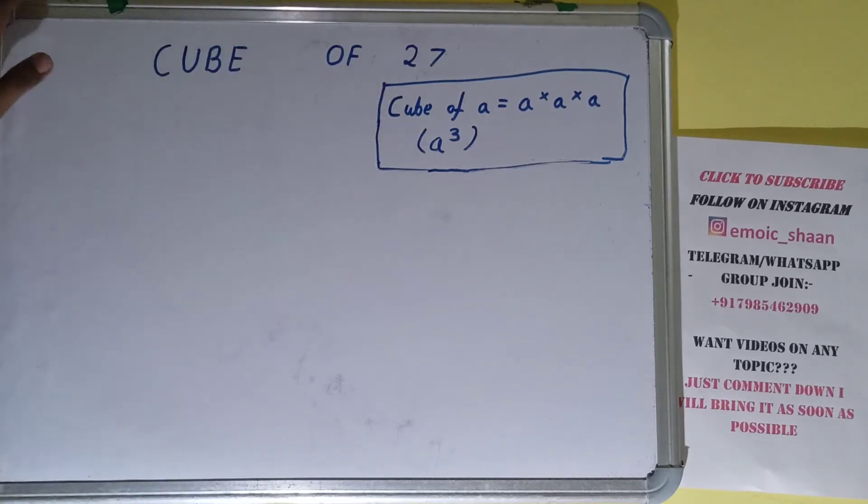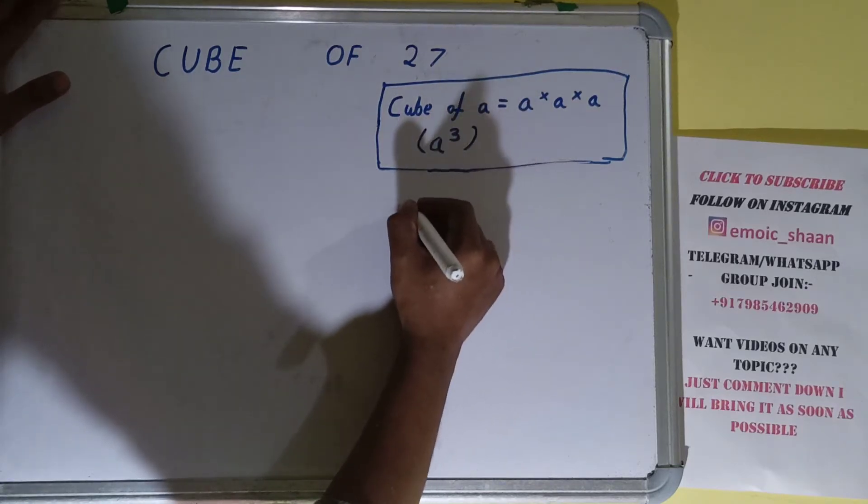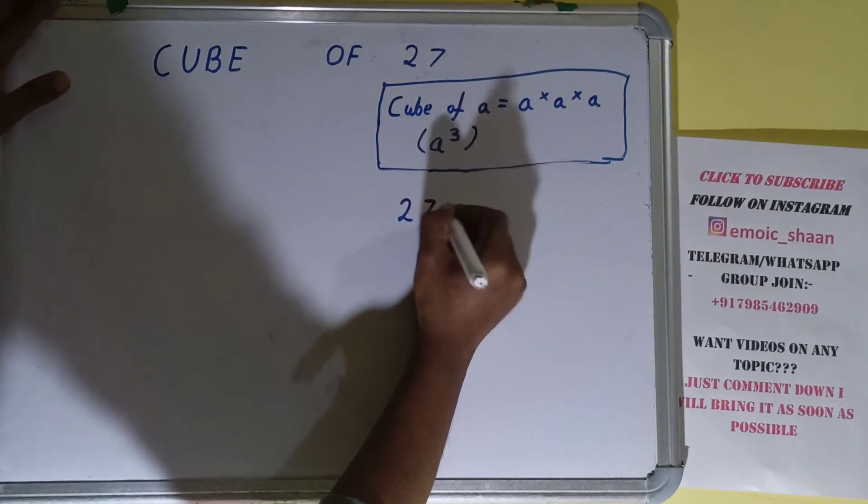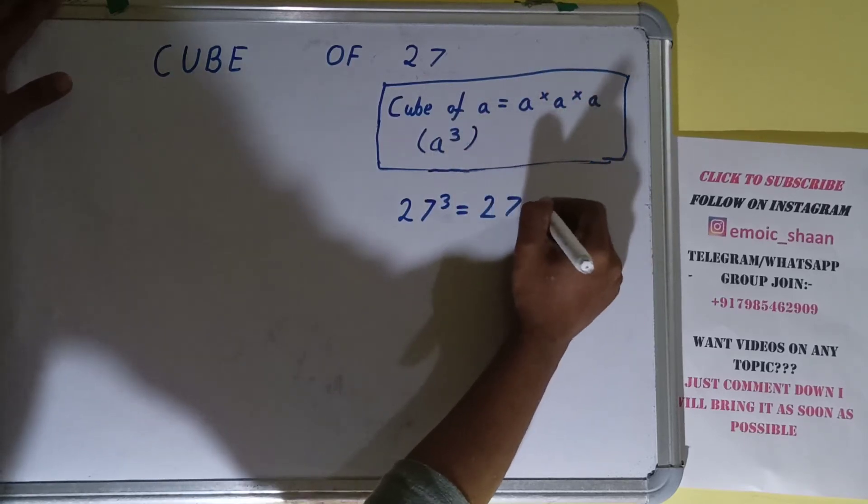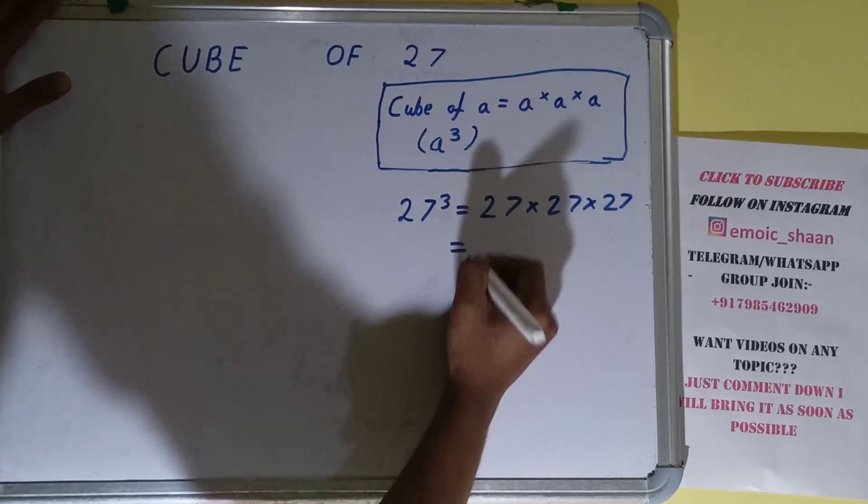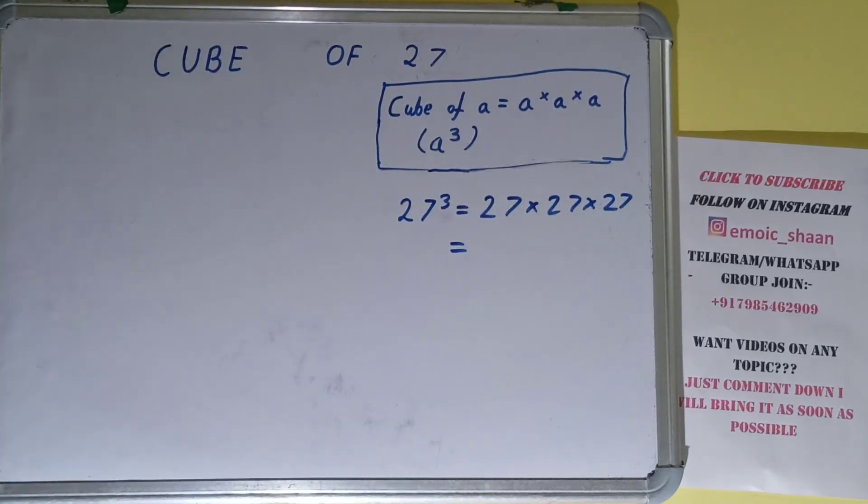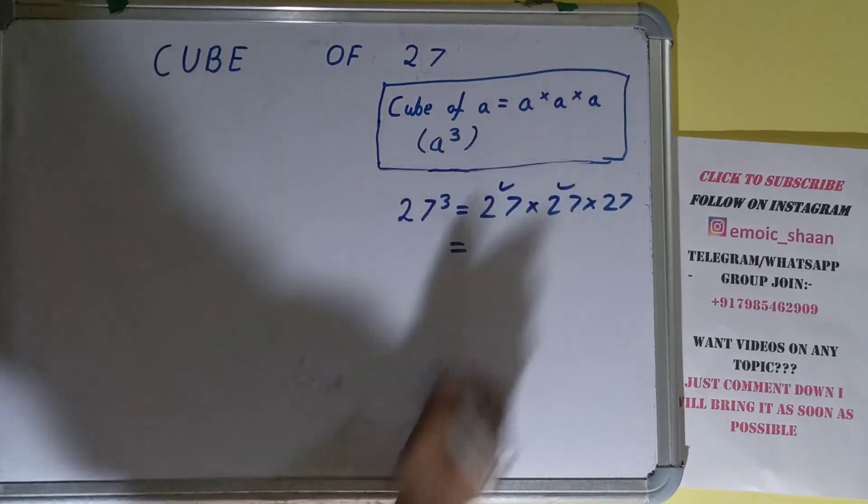Now moving on to our question, we need the cube of 27. So what we need - we just need to place 27 in place of a like this: 27³ equals 27 into 27 into 27. Now to calculate the answer, we can just do the normal multiplication. For that, we'll first multiply the first two pairs of 27, and whatever answer we get, we'll multiply with the third one.